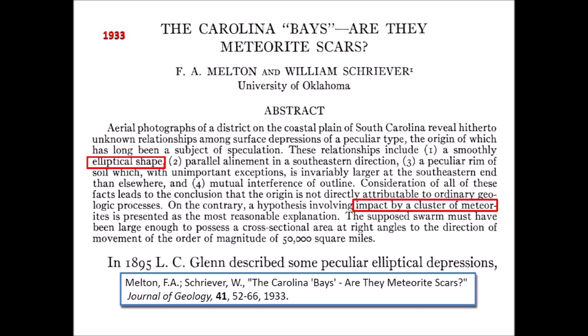The idea that the Carolina Bays were created by impacts goes back to 1933, when professors Frank Milton and William Shriver from the University of Oklahoma published a research paper in the Journal of Geology. The abstract of their paper says that the smooth elliptical shape of the Carolina Bays is one of the facts that leads to the conclusion that the bays were not formed by ordinary geologic processes, and that impacts by a cluster of meteorites provide the most reasonable explanation for the origin of the bays.